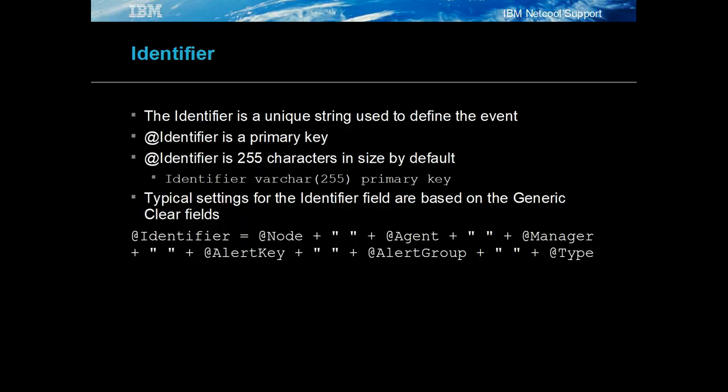The identifier is a unique primary key field in the object server's alerts.status table. It is typically made up of generic clear fields, although it could be made up of any string that uniquely defines the event, such as the alarm number from another system.